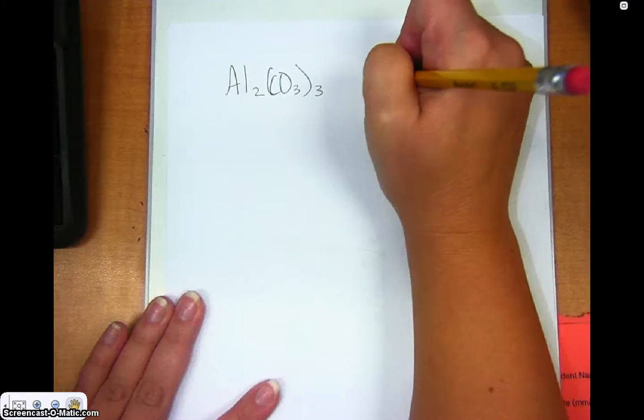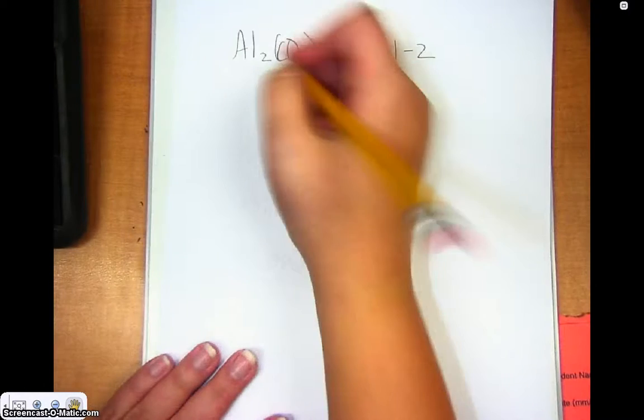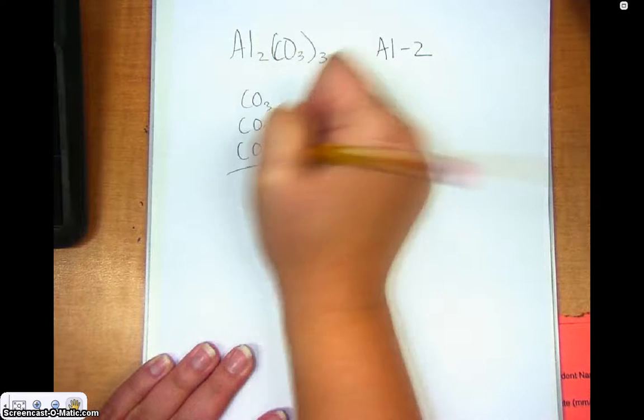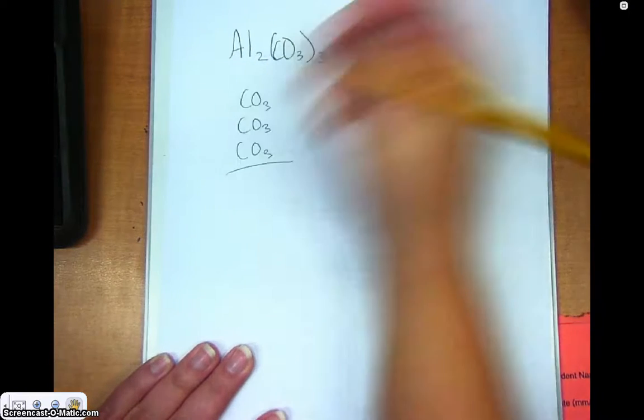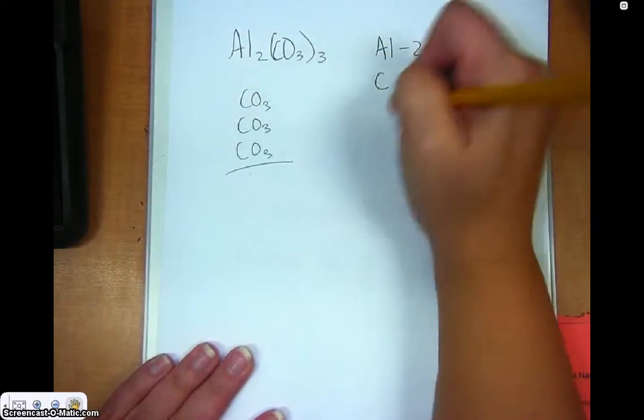What this means is that you have two aluminums, and that you have three carbonates. So, if I want to make my list of elements, I've got two aluminums, and then I'm going to have three carbonates. So, that's a total of three carbons, and then nine oxygens.